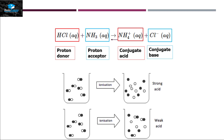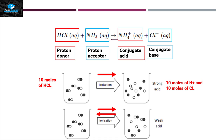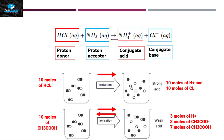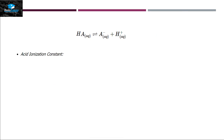A strong acid or base undergoes a one-way reaction. For example, 10 moles of HCl will completely dissociate into 10 moles of H⁺ ion and 10 moles of Cl⁻ ion. But a weak acid or weak base undergoes a two-way reaction. For example, 10 moles of acetic acid — a weak acid — will produce only 3 moles of H⁺ ion and 3 moles of acetate ion, while 7 moles remain unchanged.